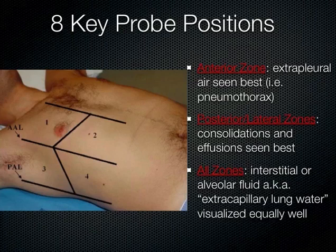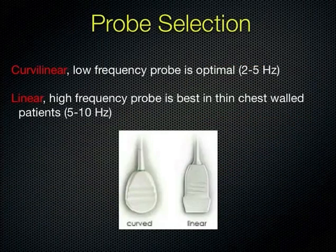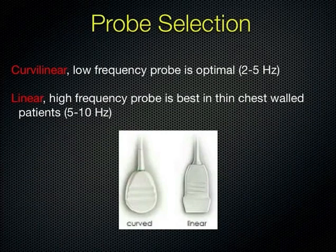Briefly, for probe selection: ideally we use the curvilinear probe, but it depends on your patient's body habitus. You can also use the high-frequency linear probe or the cardiac probe. A lot depends on whether you're looking for the forest or the trees. For the big picture, start with the low-frequency probe for a deeper view. When looking for detail — such as when evaluating pneumothorax — pick up the high-frequency probe for more detail.